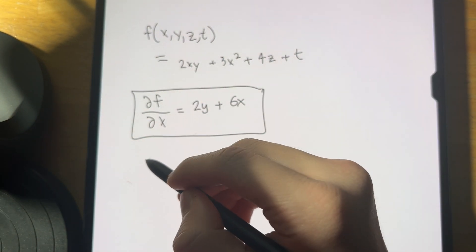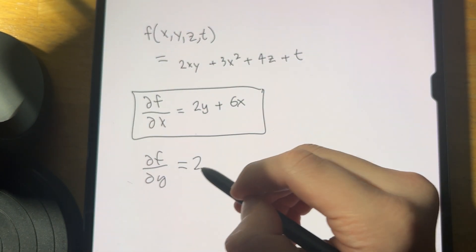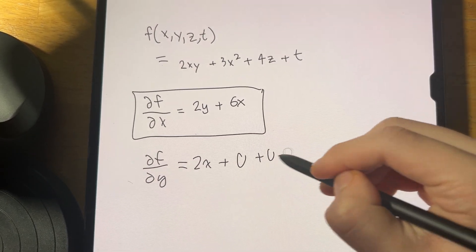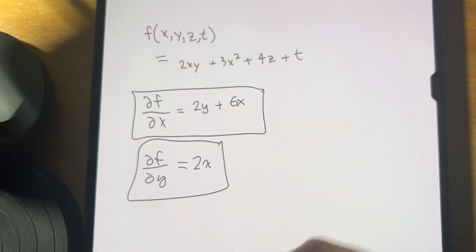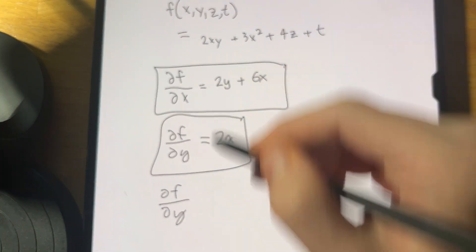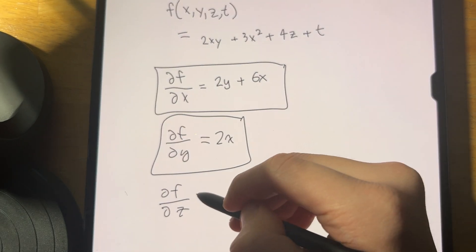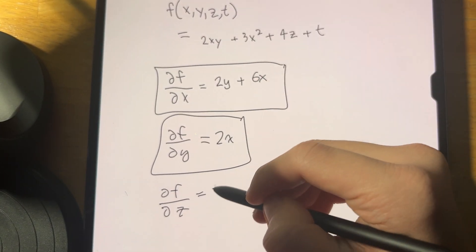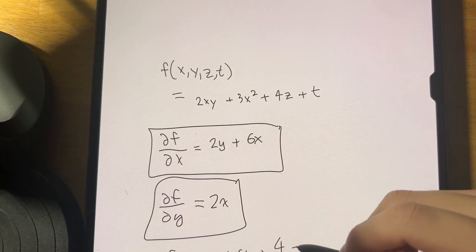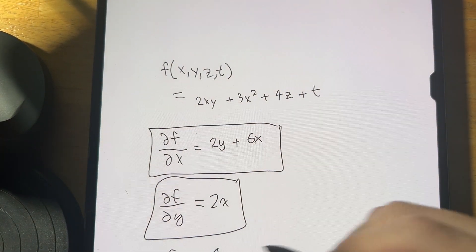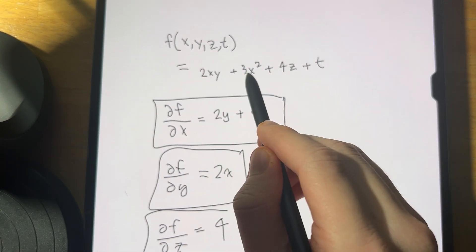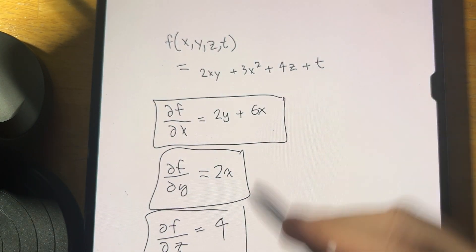For ∂f/∂y, it's 2x plus zero plus zero plus zero, so just 2x. The partial derivative with respect to z treats everything else as constants, giving just 4. And ∂f/∂t is trivial — everything else is zero, so it equals 1.